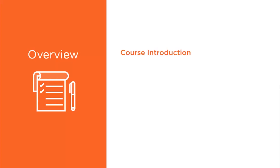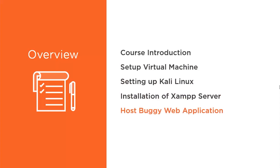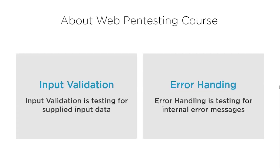In this module we will learn about the course introduction, we will set up a virtual machine inside the main operating system, we will set up the Kali Linux operating system, then we will install the XAMPP server, and finally we will host a buggy web application inside it.